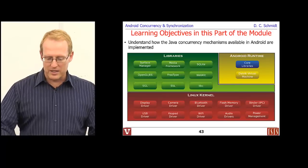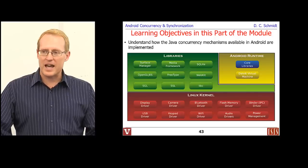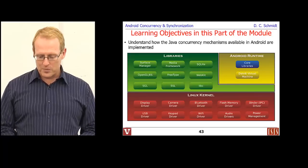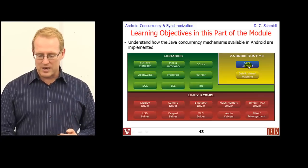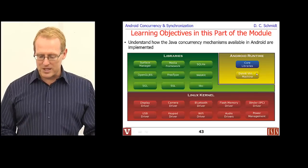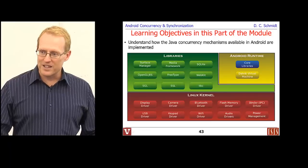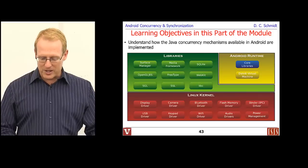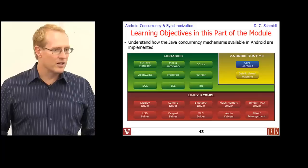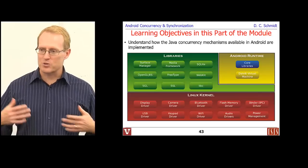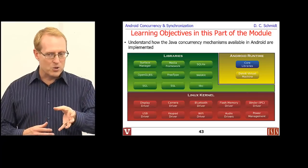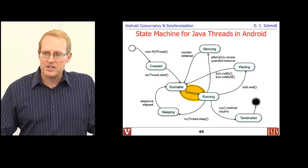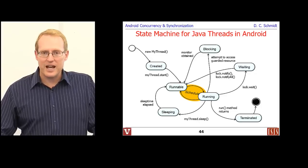Let's peek under the hood at how threads are actually implemented. There are several layers involved: the core Java libraries like java.lang.Thread, the Dalvik virtual machine, the libc pthreads library, and the low-level kernel internals at the bottom doing the heavy lifting to map threads to processor cores. Let's also look at the various states a thread can be in and how it transitions between them.